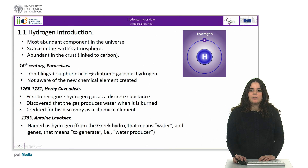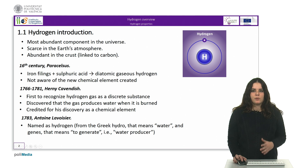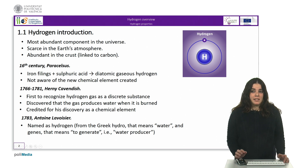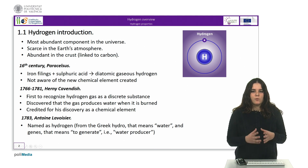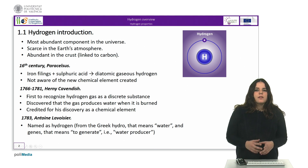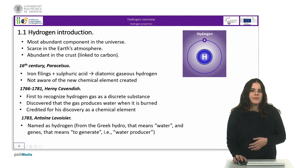In 1766, Henry Cavendish was the first to recognize hydrogen gas as a discrete substance. Later, in 1781, he discovered more deeply that this gas produced water when it was burned. Therefore, he is generally credited for the hydrogen discovery as a chemical element.